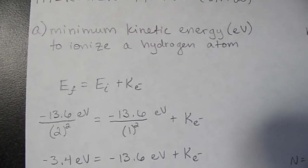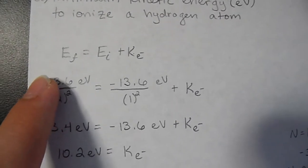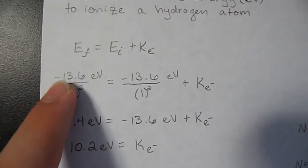First, the minimum kinetic energy in electron volts to ionize a hydrogen atom. Using the energy principle, or the energy update principle, it's pretty simple.